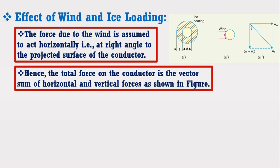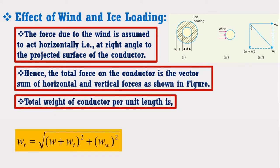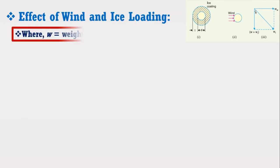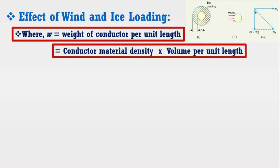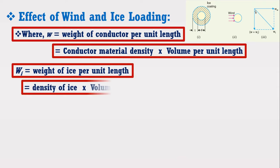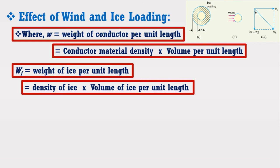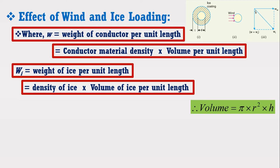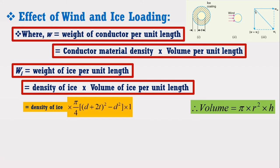Hence, the total force on the conductor is the vector sum of horizontal and vertical forces. The total weight of the conductor per unit length is given by the formula, where w is the weight of the conductor per unit length — given by conductor material density into volume per unit length — and Wi is the weight of ice per unit length, equal to density of ice into volume of ice per unit length. The volume uses pi r squared h. From the figure, d is the diameter of the conductor and t is the thickness of ice, which exists on both sides, making total diameter d plus 2t. Subtracting the actual conductor diameter gives the ice thickness, yielding: density of ice into pi upon 4 into (d plus 2t) squared minus d squared into 1, where h is taken as 1 meter.